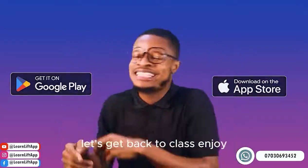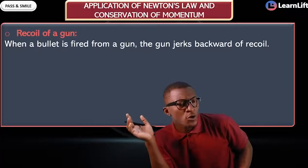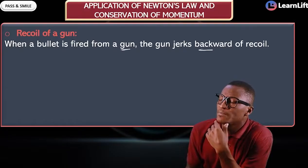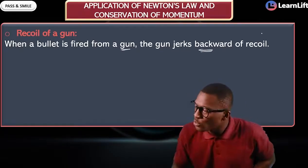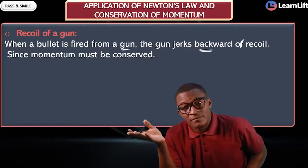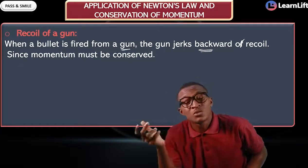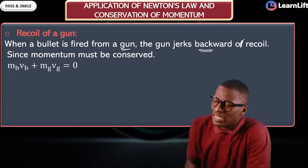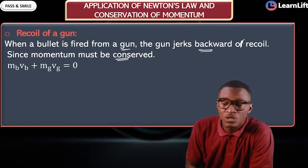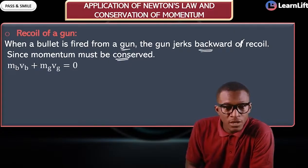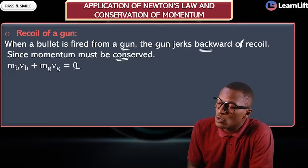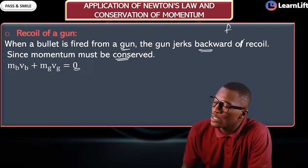Now, in the recoil of the gun: when a bullet is fired, the gun jerks backward — it recoils. Since momentum is conserved, the net momentum is equal to zero. That means the momentum of the bullet — mass of bullet times velocity of bullet — plus the mass of the gun times velocity of the gun equals zero.